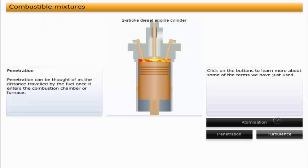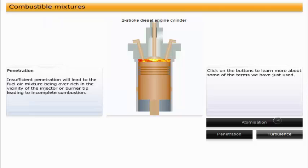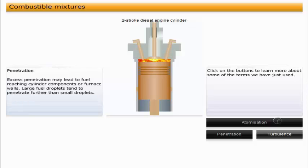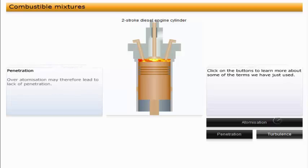Penetration can be thought of as the distance traveled by the fuel once it enters the combustion chamber or furnace. Insufficient penetration will lead to the fuel-air mixture being over-rich in the vicinity of the injector or burner tip, leading to incomplete combustion. Excess penetration may lead to fuel reaching cylinder components or furnace walls. Large fuel droplets tend to penetrate further than small droplets. Over-atomization may therefore lead to lack of penetration.